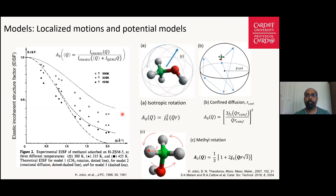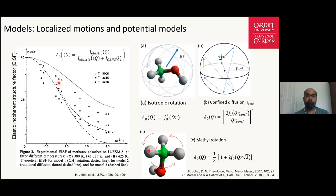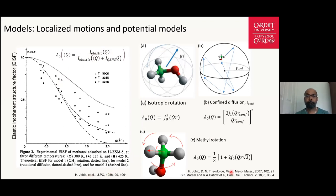Different theoretical models are shown here. Localized motions, or in this case methanol dynamics, can be analyzed by the elastic incoherent structure factor (EISF), which is the ratio between the elastic peak area and the total peak area. The experimental EISF data can be fitted with different theoretical models — for example isotropic rotation, confined diffusion of methanol within a pore volume of ZSM-5, or methyl rotation. These models are described in detail in the referenced articles.